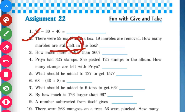The word 'left' is being used here, so we will subtract. This question is a word problem, so we have to write a statement also. Total number of marbles in the box equals 59, and number of marbles removed equals 19.